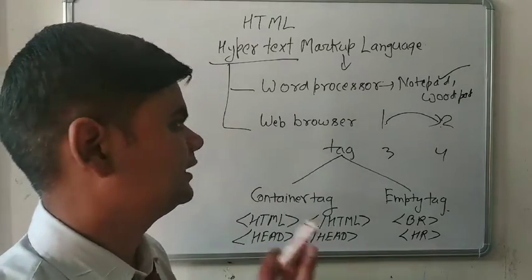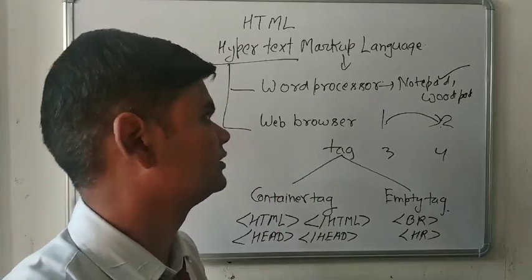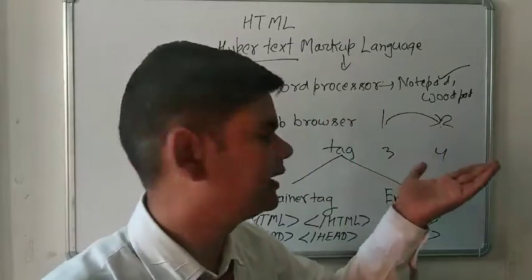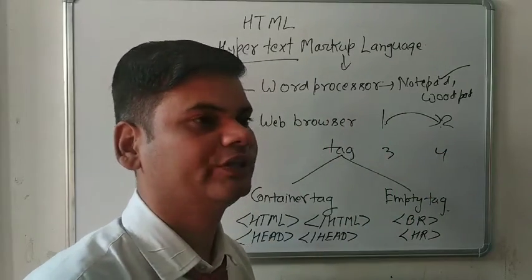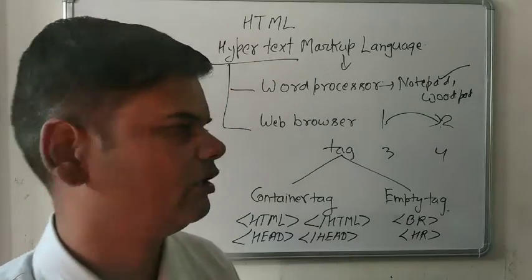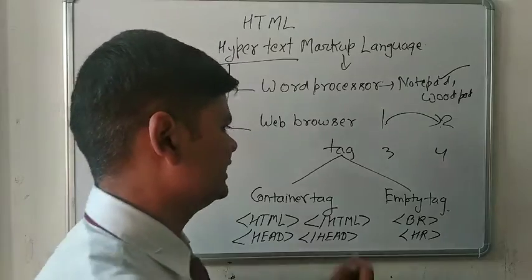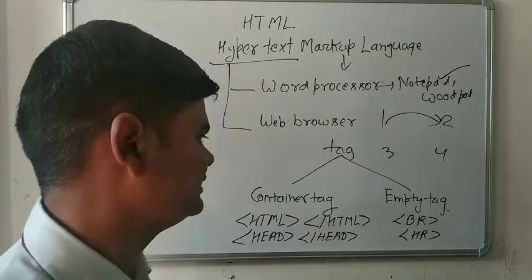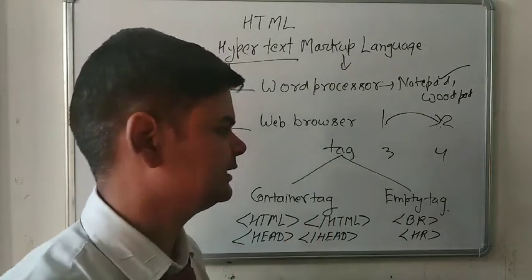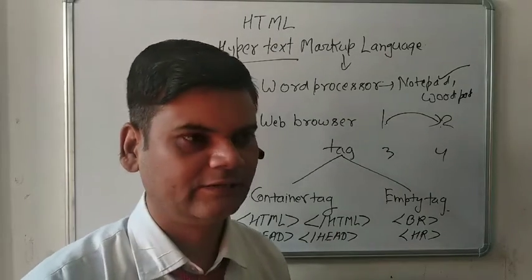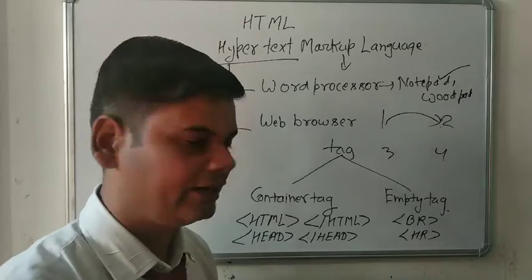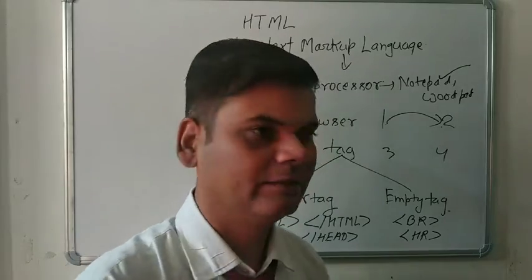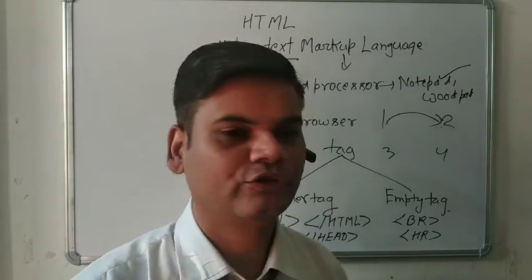For HTML we need two things: one is the word processor and second is the web browser. Word processor means software used for writing the HTML program, like Notepad or WordPad. Web browser is used for showing the output of an HTML program — you can use Google Chrome, Mozilla, or Internet Explorer. Tags are keywords used for showing formatting and displaying the web page, having two parts: container tag with starting and ending, and empty tag with only the starting tag, for example the BR tag for line break and HR tag for horizontal line.